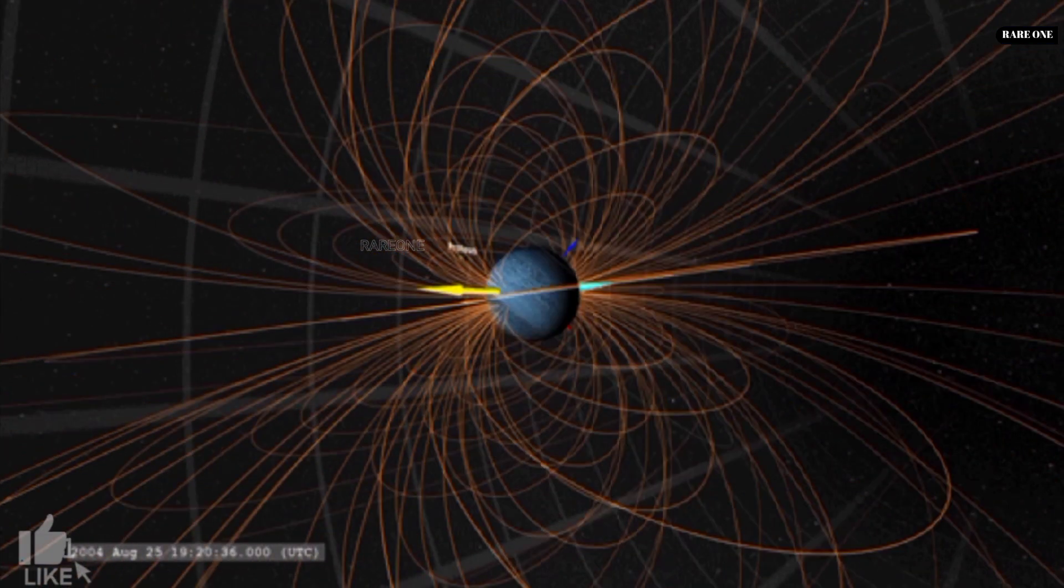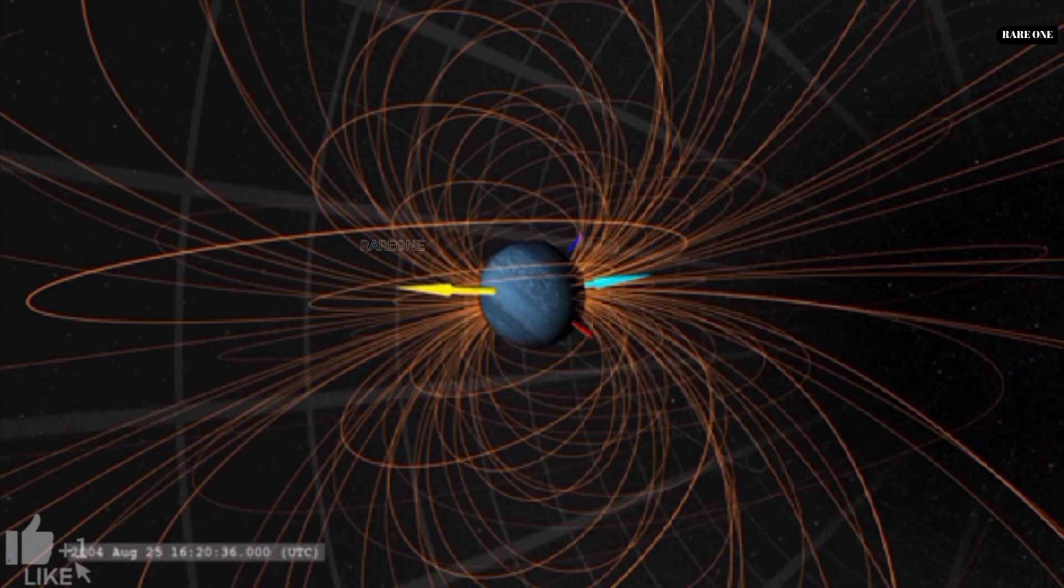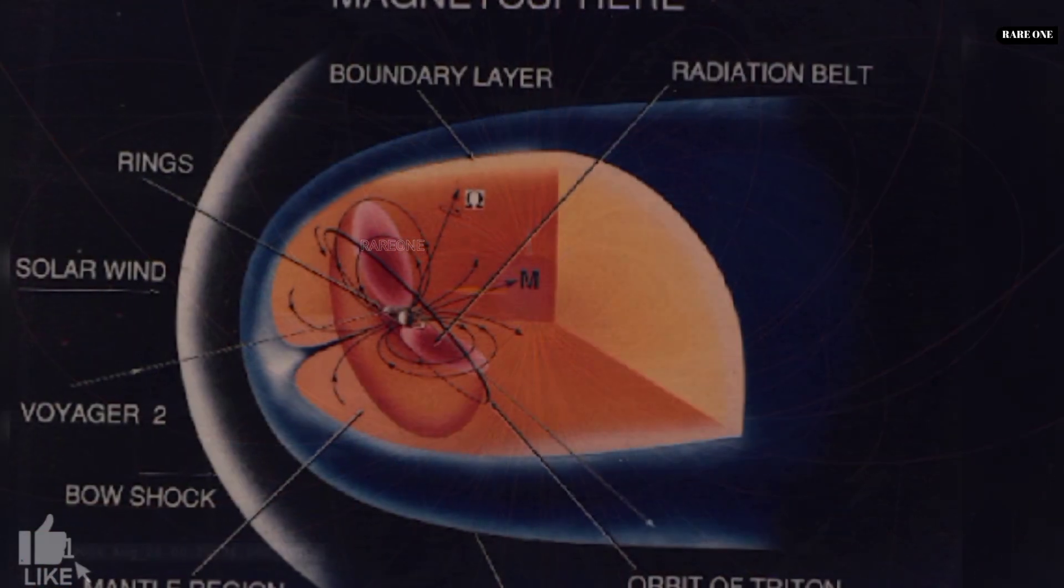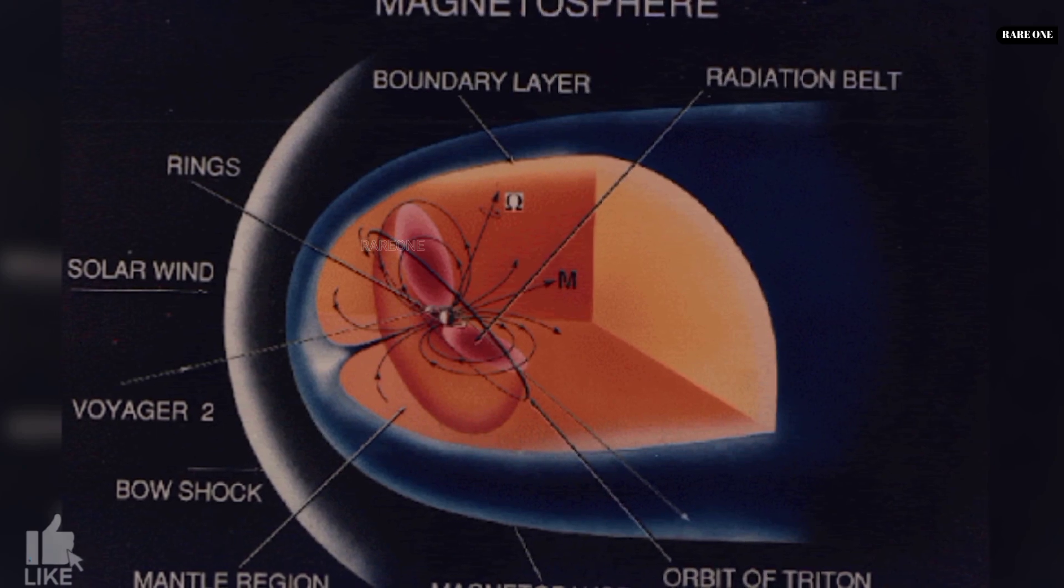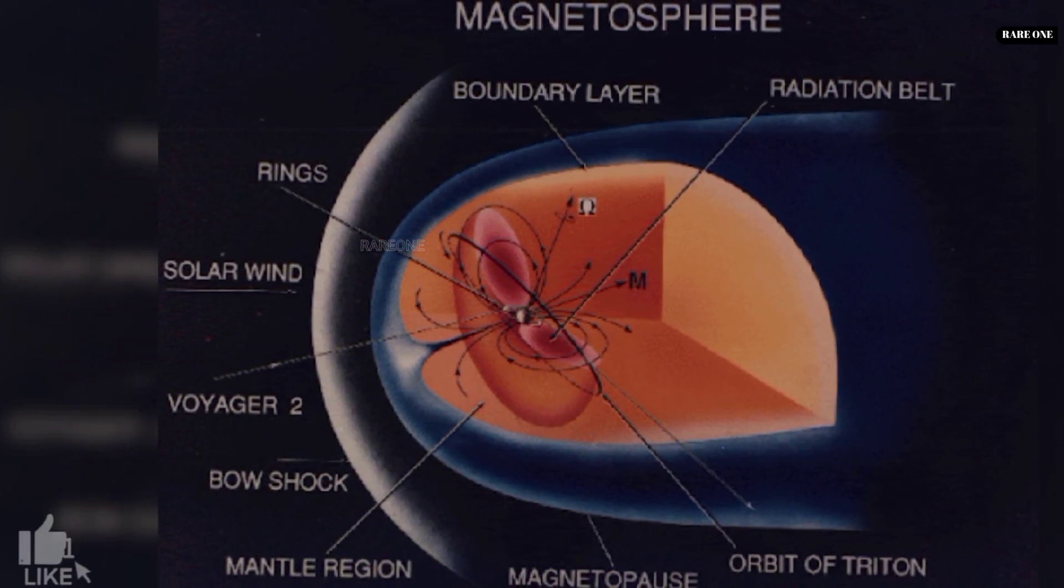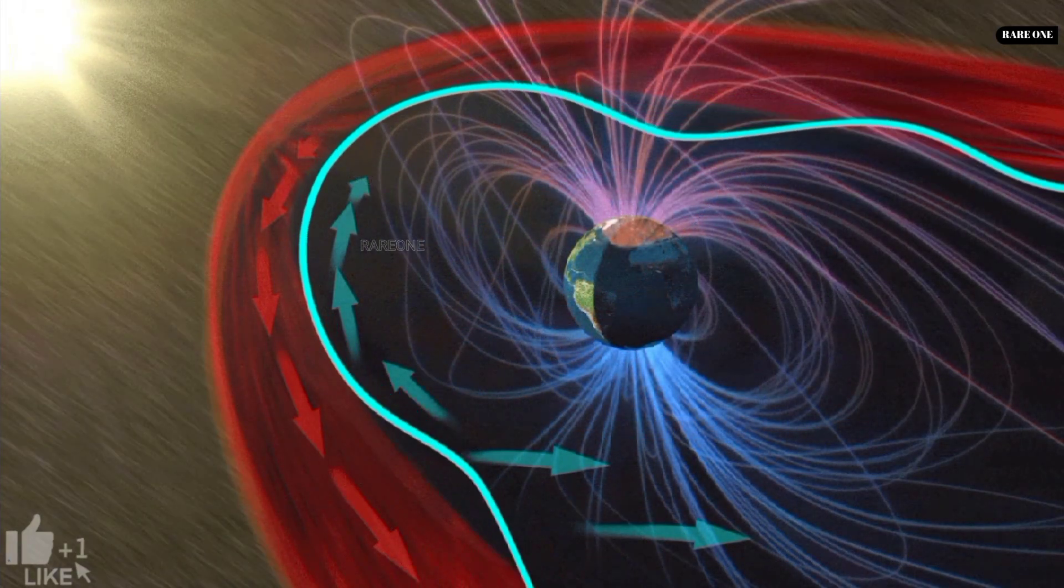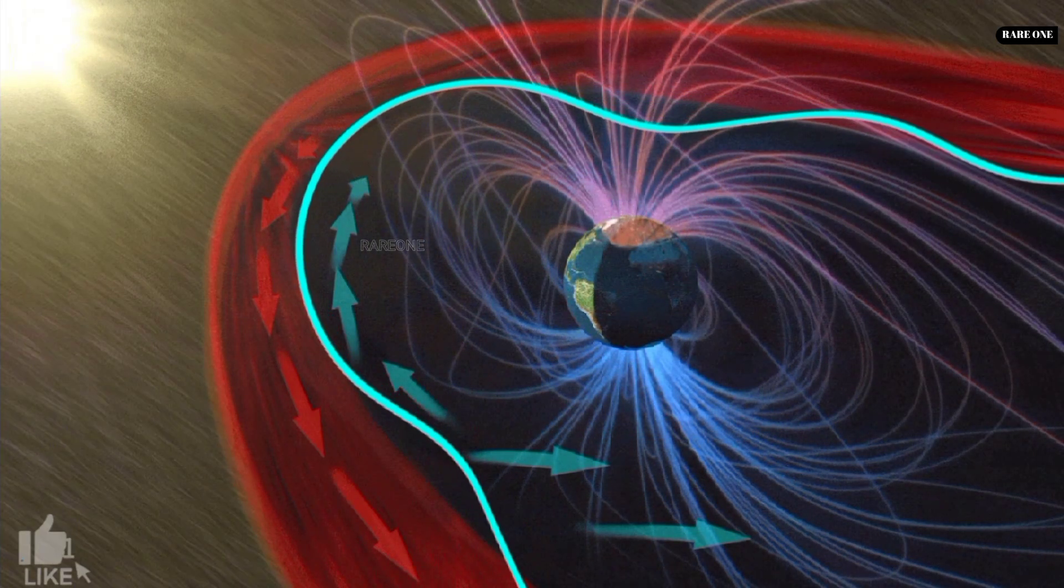One of Neptune's most perplexing features is its bizarre magnetosphere. The planet's magnetic field is misaligned by a staggering 47 degrees from its rotation axis, causing wild fluctuations as the field shifts orientation with each spin. In fact, Neptune's magnetic field is a whopping 27 times stronger than Earth's.